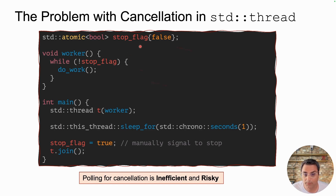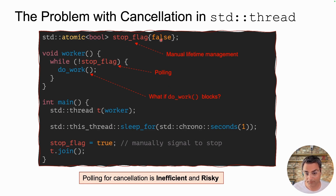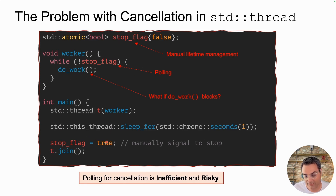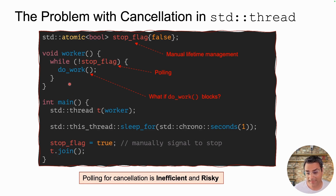This would work, but there are several problems. First, we must manually manage the lifetime of this atomic boolean variable. Second, this is a busy-waiting loop and we keep polling this flag, which is not efficient for the CPU. Finally, what if you're blocked inside do_work? Even if you change this value, the while loop will never go back to check stop_flag and you get stuck — so t.join will never join. You have to make sure this is not blocked, on top of the other problems.